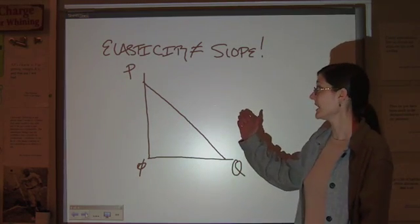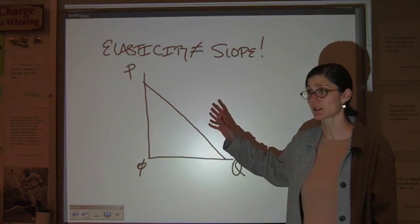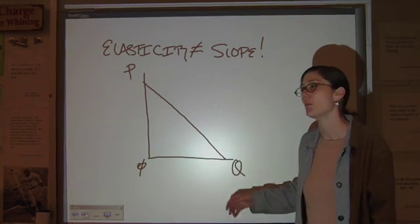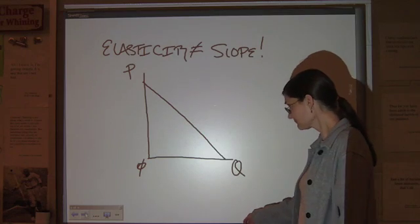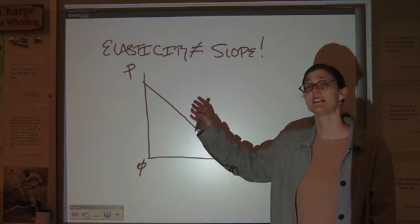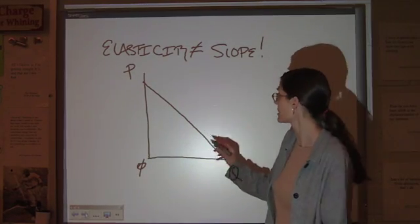And it would seem to make sense that slope is like elasticity, but on a straight line curve, that's not how it works mathematically. You actually have three different regions of this curve that we need to split up and talk about separately.